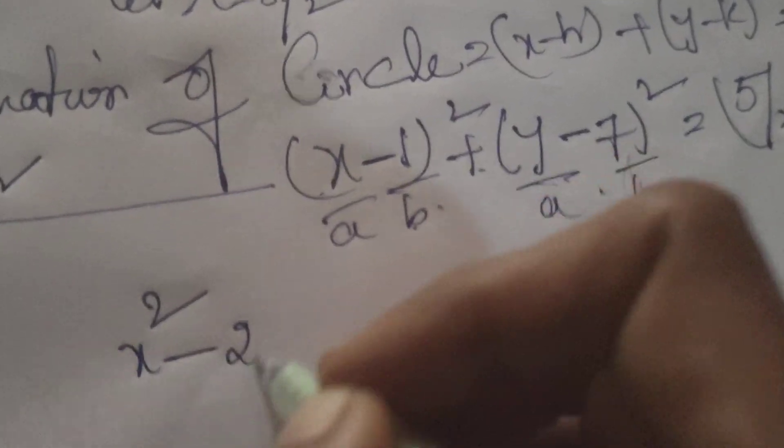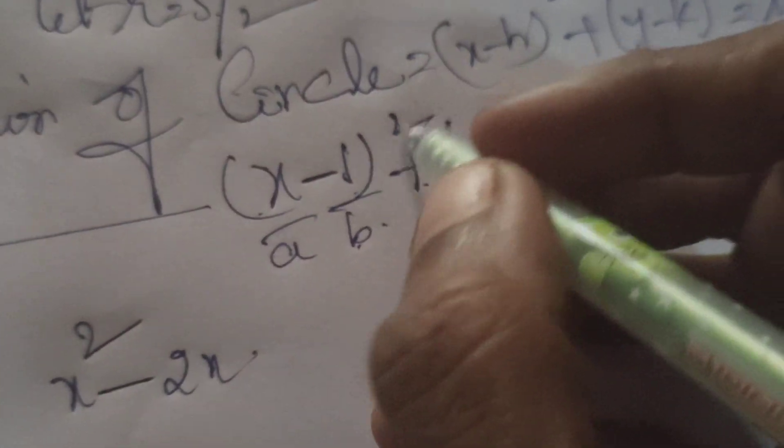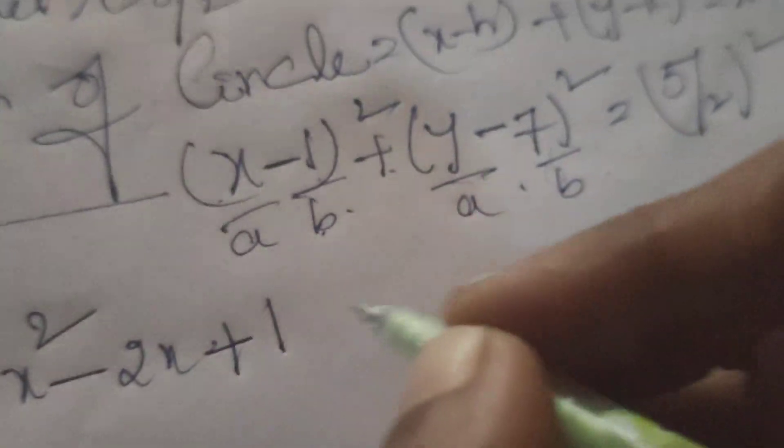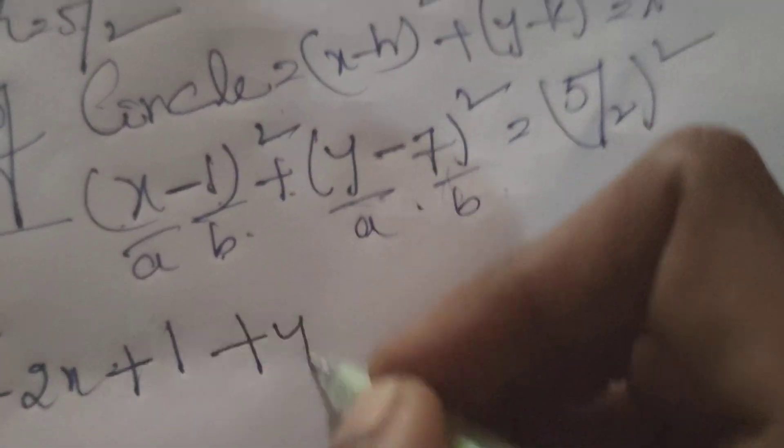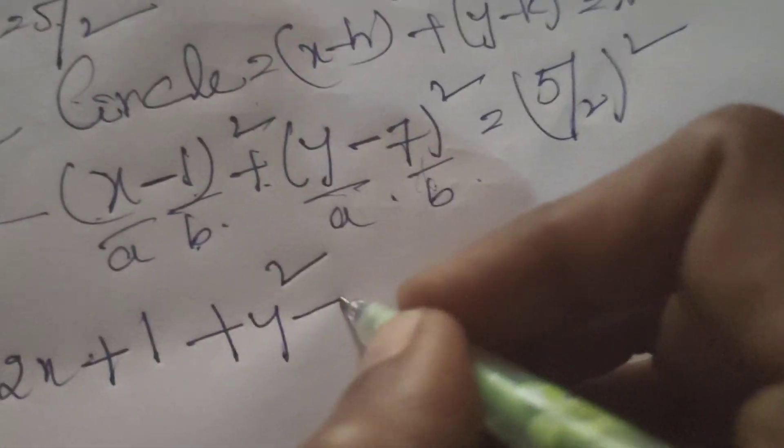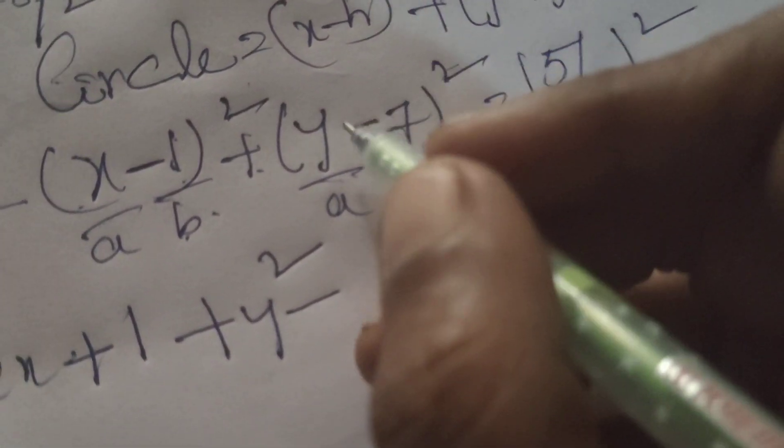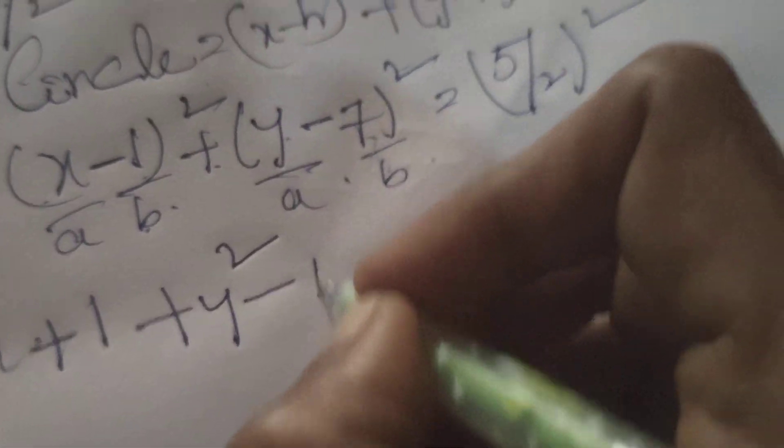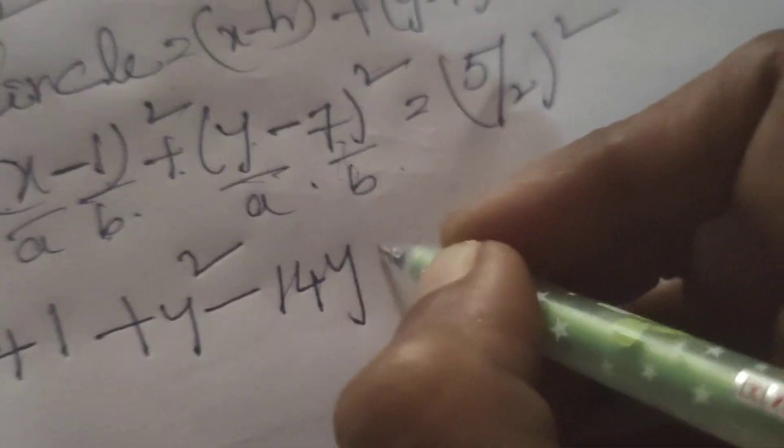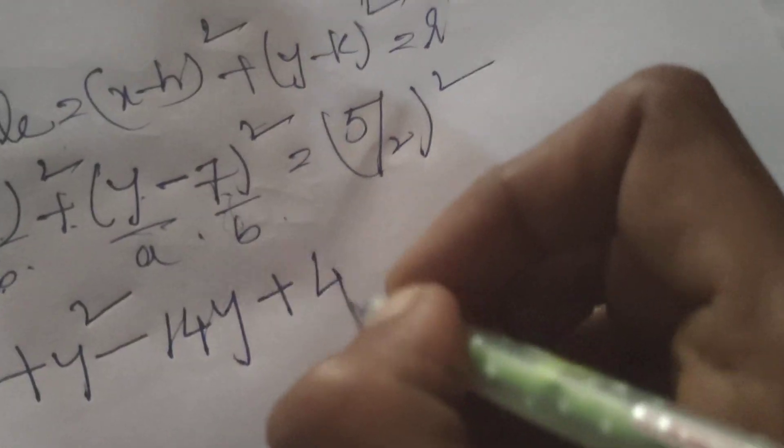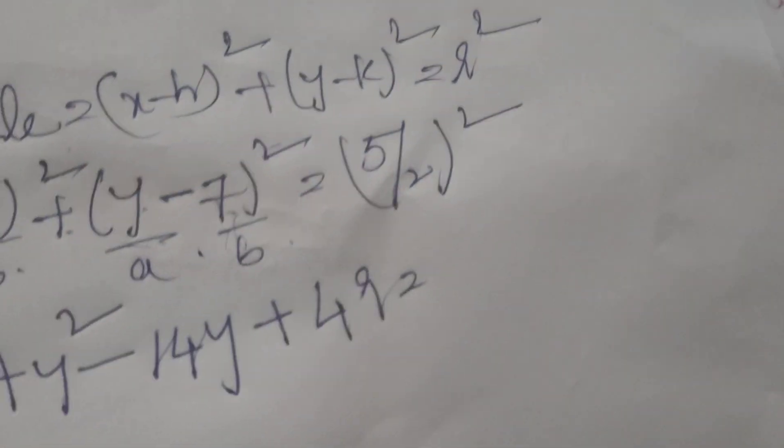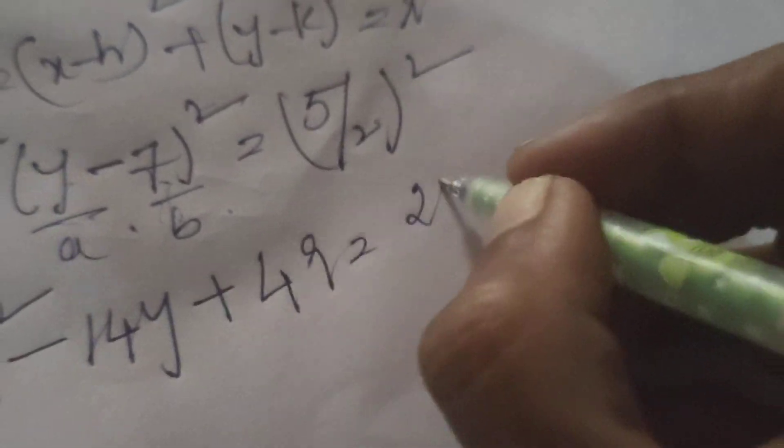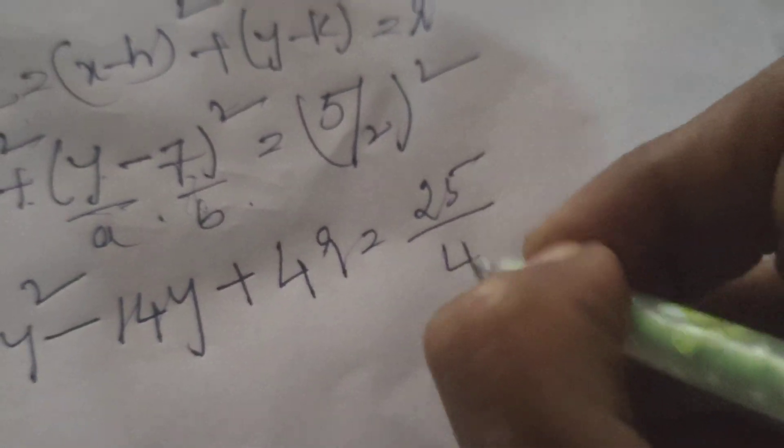Therefore x² - 2x + 1 plus y² - 2y(7), that is -14y plus 49, equals to (5/2)² = 25/4.